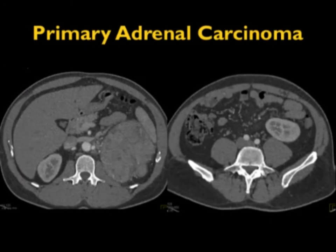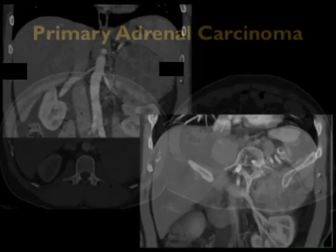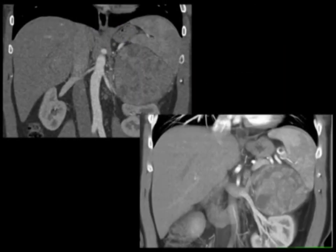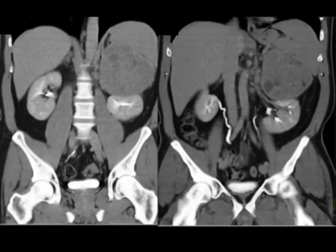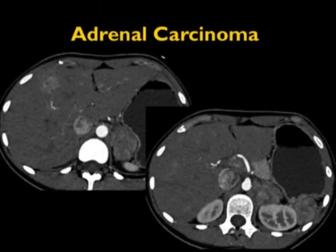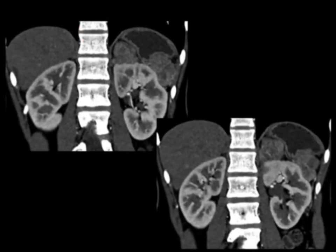Here's a nice example — classic left adrenal mass, pushes on the patient's left kidney, solid with minimal enhancement. This was a primary adrenal carcinoma. Very nice vasculature on both the arterial and venous sides, which were invaded. You can see the extent of that tumor and its orientation. Here's a case of a left adrenal mass with metastasis to the adrenal, seen very nicely on the coronal view — a normal right adrenal but a mass in the patient's left adrenal.